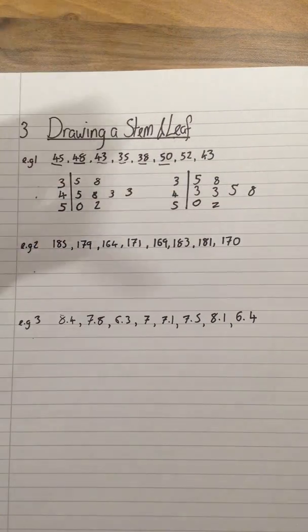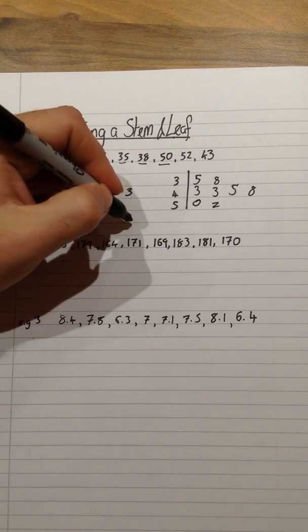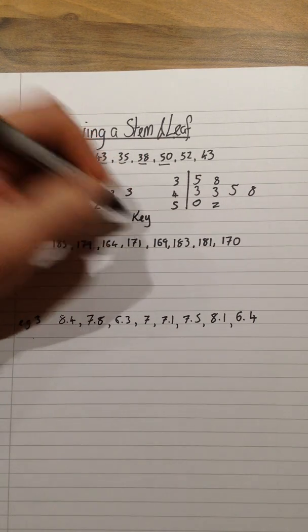This is known as an ordered stem and leaf. The final thing I need to do is just actually write down a key. Something that allows other people that are looking at this diagram to know what each of these numbers means. To do that, let's just write down the word key.